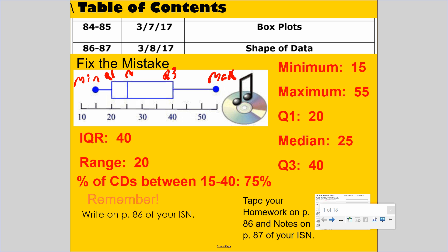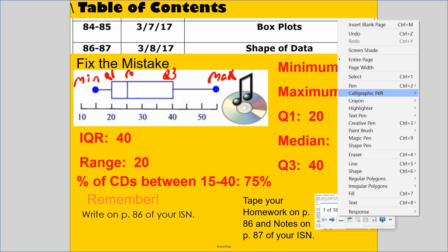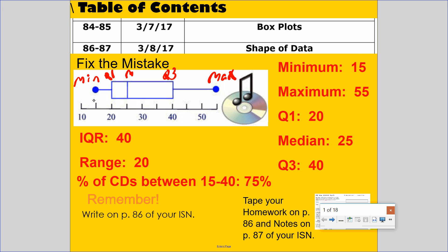Let's go through each one and see which makes sense. The minimum is 15 — check. The maximum is 55 — check. Q1 is 20 — check. The median is 25 — check. Quartile three is 40 — check. So far, perfect.